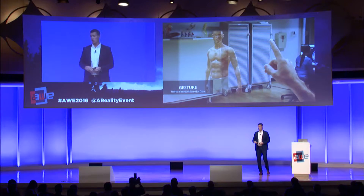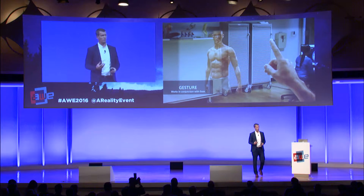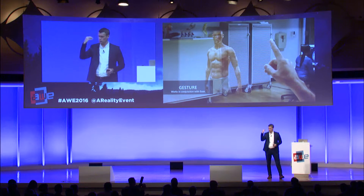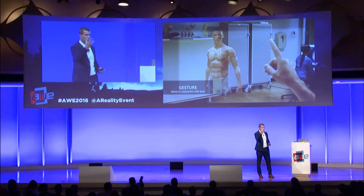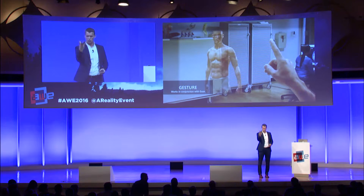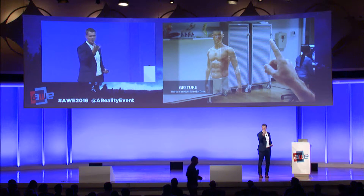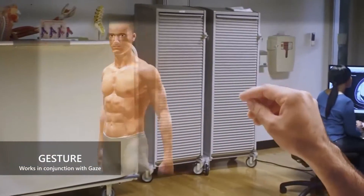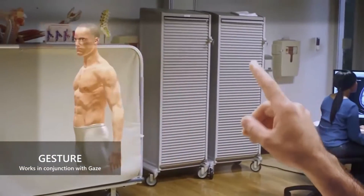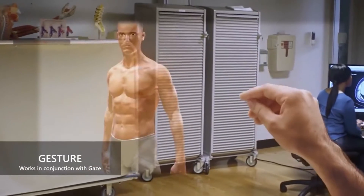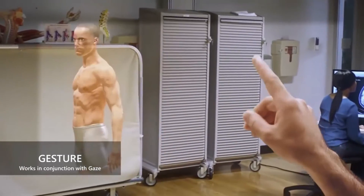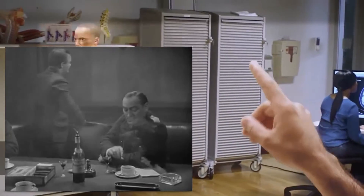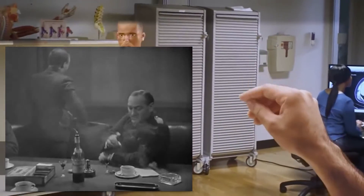A further problem is that many of the gestures we currently use are not actually natural. For example, the Microsoft HoloLens bloom gesture or the air tap gesture — when you try to demo this to someone, they instinctively try to click by touching, not by performing an air tap. That is not a natural gesture. It might be natural if you're a chain smoker, but probably not for the majority of people.